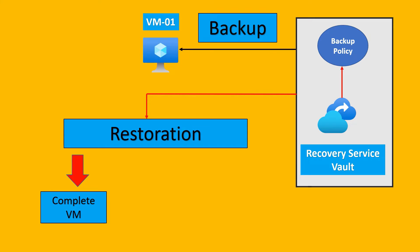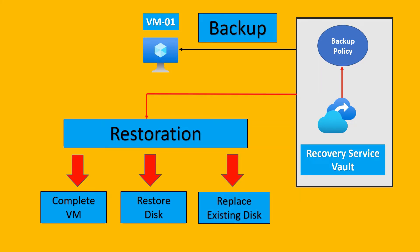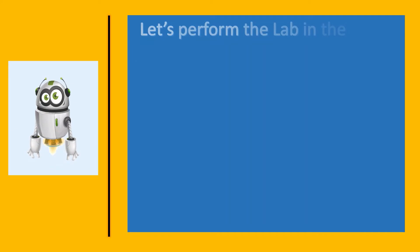The first restoration method is complete virtual machine restoration — using this you can restore the complete virtual machine in Azure, so if you have VM01 you can restore VM02 as the restored virtual machine. The second restoration method is restore disk, and the third method is replace existing disk. Using the second and third options you restore or replace the disk, whereas the first option gives you the complete virtual machine restoration along with the disk. You can choose any method as per your need.